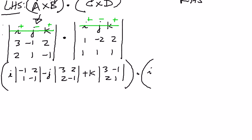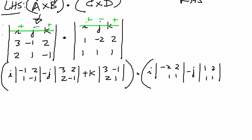For c cross d: i times the minor of negative 2, 2, 1, 1; minus j times the minor of 1, 2, 1, 1; plus k times the minor of 1, negative 2, 1, 1. So this is what we have.